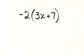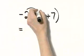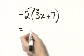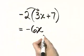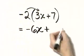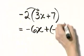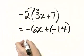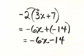Let's use distributive property and multiply. So that will be negative 2 times 3x. Negative 2 times 3 is negative 6, so I'll have negative 6x plus negative 2 times 7. That is negative 14. You can leave it like this or you can write it as negative 6x minus 14.